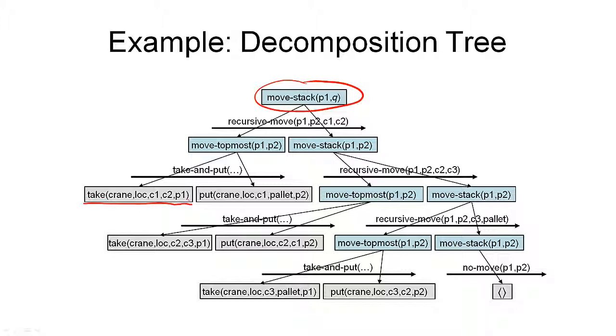For example, the first subtask here that we have in this decomposition tree that decomposes our overall tasks into smaller tasks would be to take something with a crane. We've already seen that our planning domains contain operators that can directly accomplish these so-called primitive tasks.